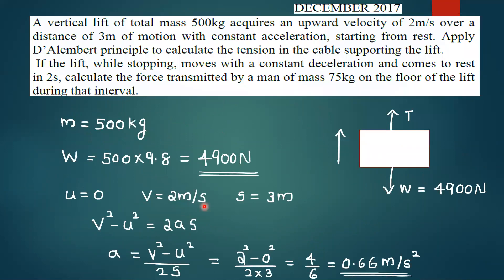Next problem: A vertical lift of total mass 500 kg attains an upward velocity of 2 m per second over a distance of 3 m of motion with constant acceleration starting from rest. Apply the principle to calculate the tension in the cable supporting the lift.